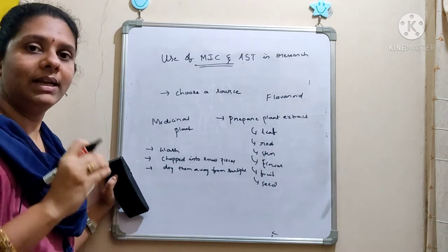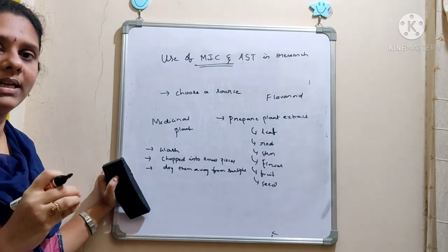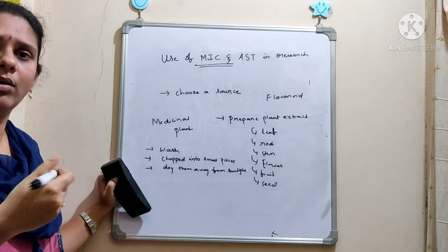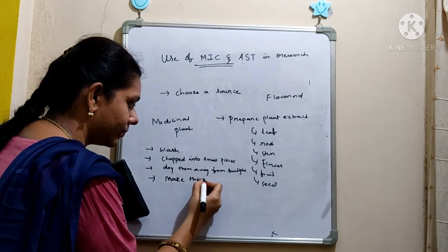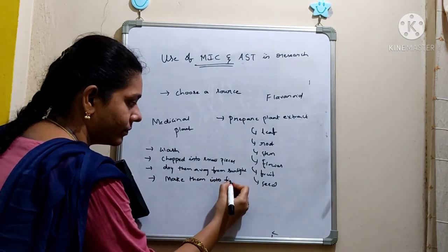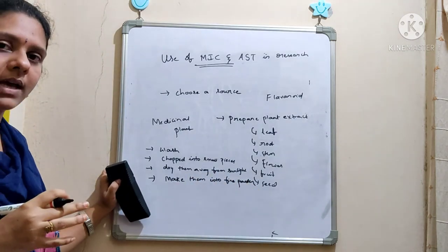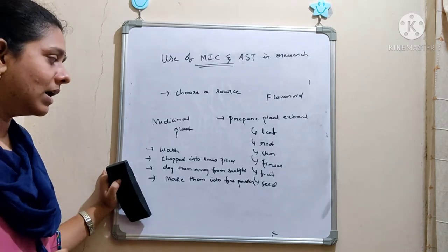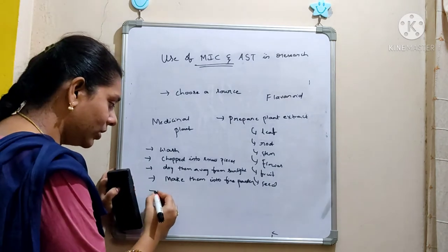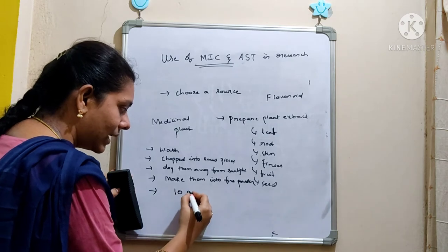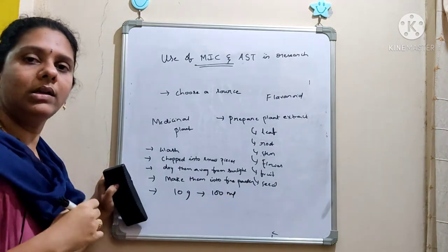Always dry away from sunlight. Once the material is dried — it may take around two to five days — you can use a mortar and pestle to grind it into a fine powder. You have collected the leaf sample, dried it away from sunlight, and now you are making it into a fine powder. Then take 10 grams of your powder and add it to 100 ml of a solvent of your choice — you can use methanol, chloroform, ethyl alcohol, or hexane.